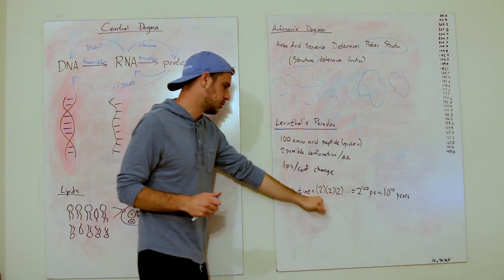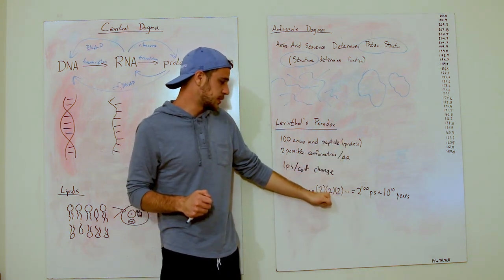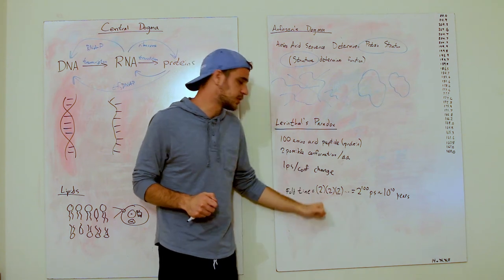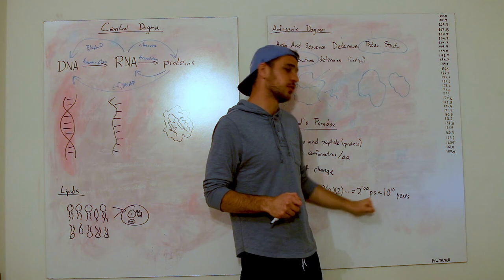So it estimates the amount of time it takes for protein to go from wiggly boy to compact boy. And it takes 2 times 2 times 2, because you have for amino acid 1, for amino acid 2, 2 times 2 times 2, so 2 to the 100th power times 2 picoseconds.